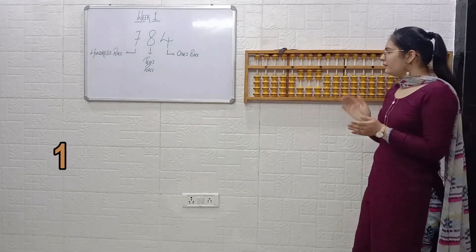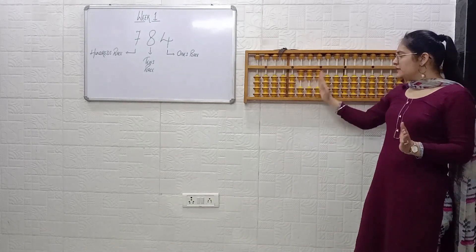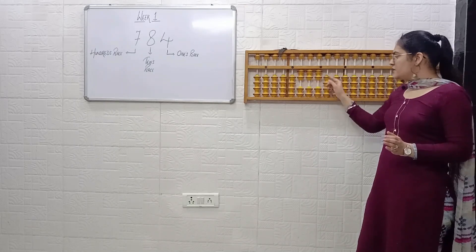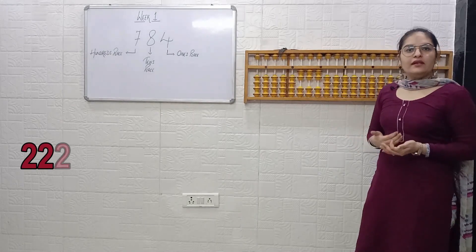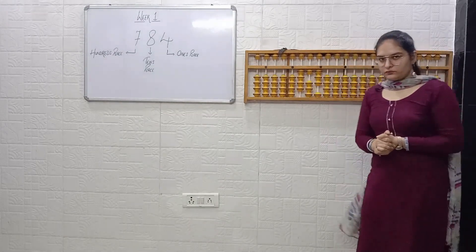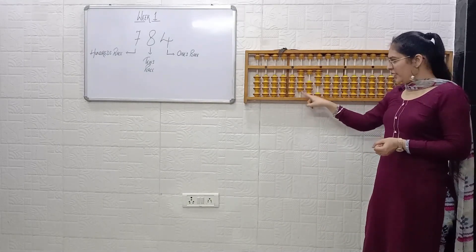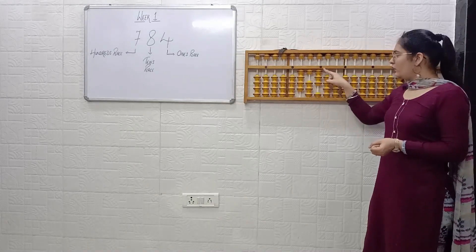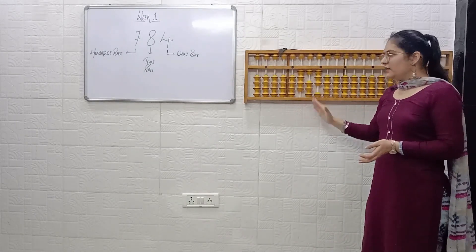Next example — tell me quickly. At hundreds place: 1, 2 — keep that 2 in your mind. Tens place: 1, 2. Ones place: 1, 2. So 2, 2, 2 — answer is 222. Next: at hundreds place: 1, 2, 3, 4 — that is 4. At tens place: 1. At ones place: 1, 2, 3. So 4, 1, 3 — answer is 413.